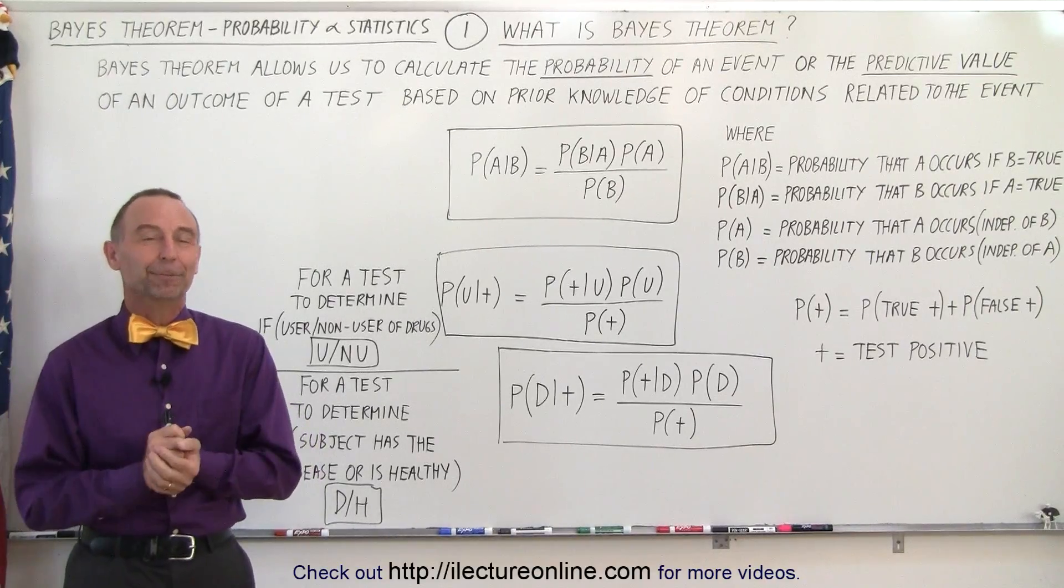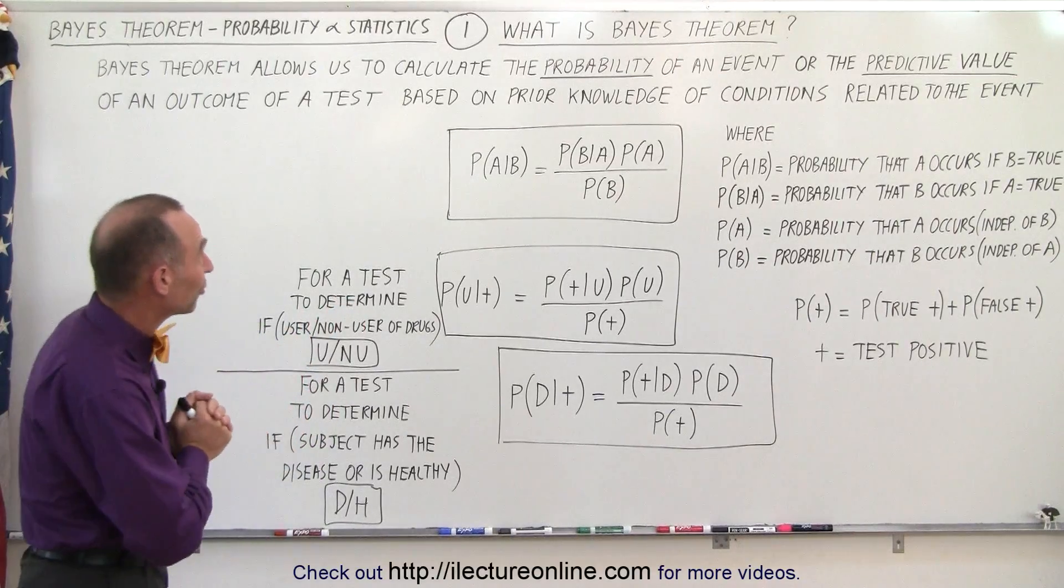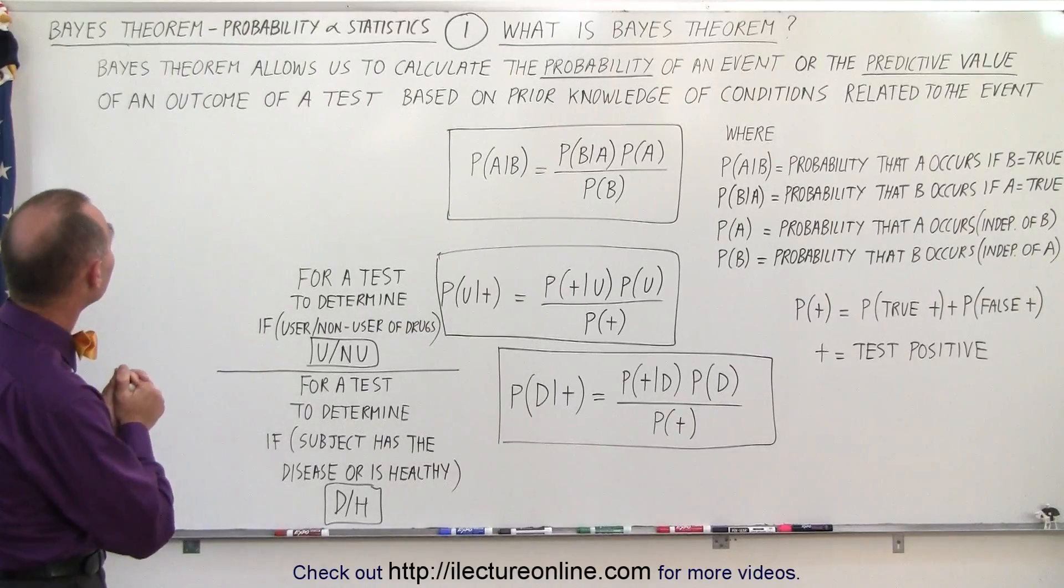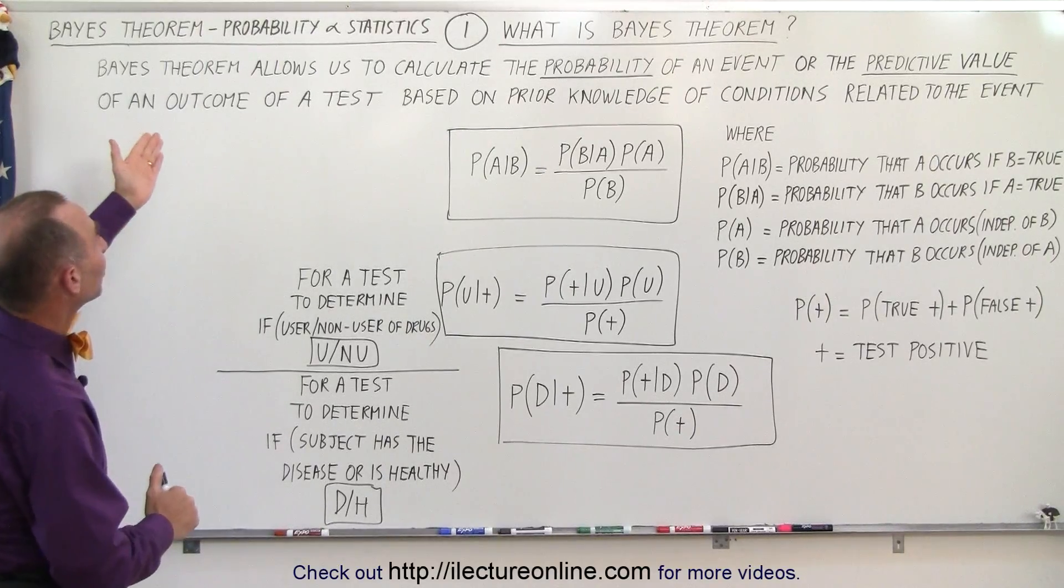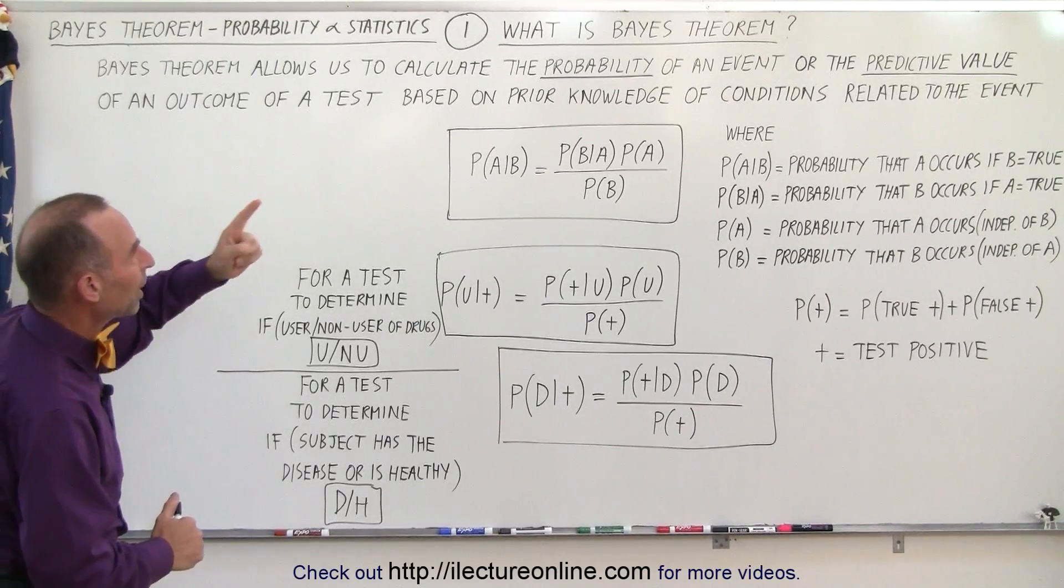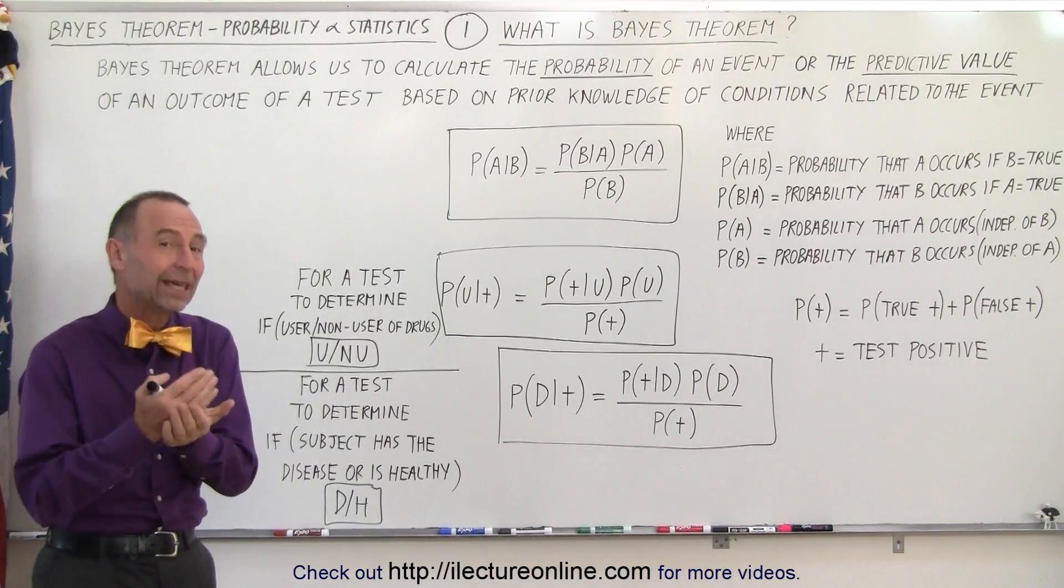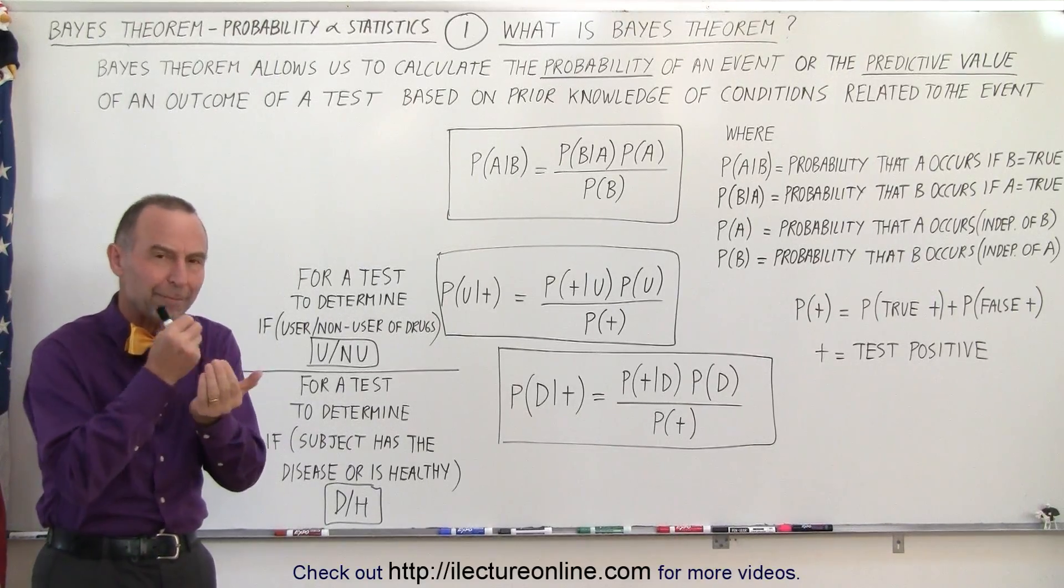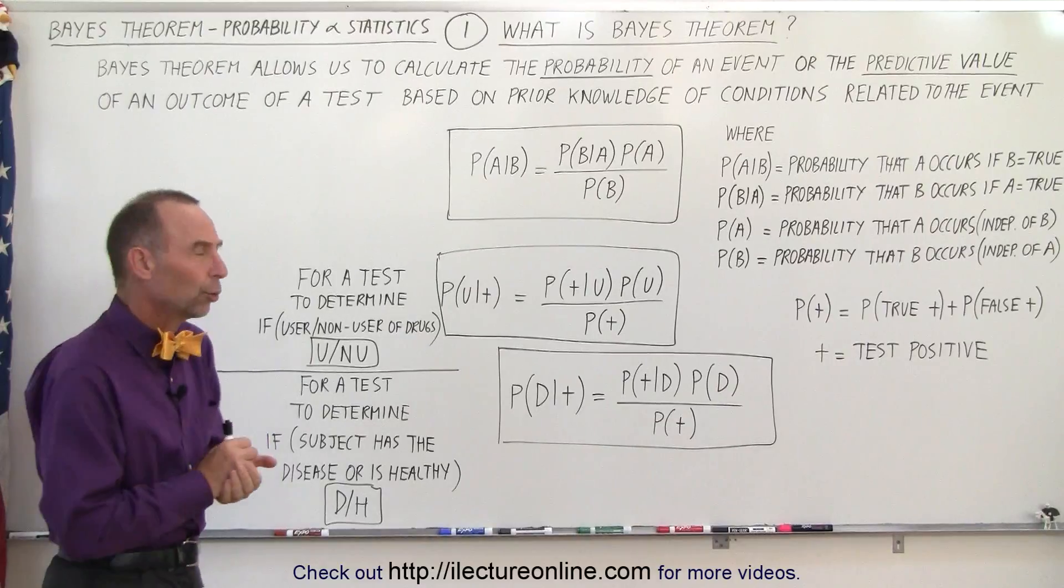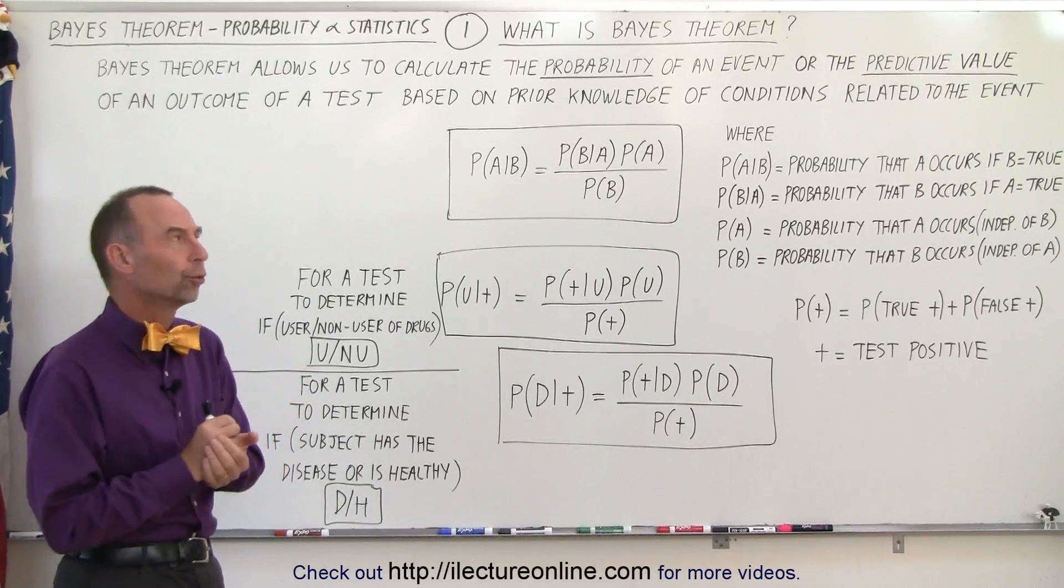So what is Bayes' Theorem? Well, we have a definition here on the board, so let's read it and see what it says. It says here that Bayes' Theorem allows us to calculate the probability of an event. So one thing it can do is calculate the probability that something will occur or that some condition is true.